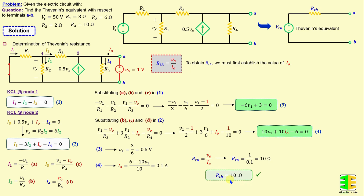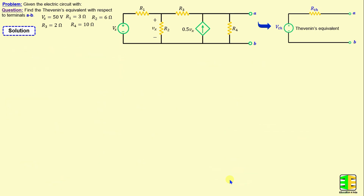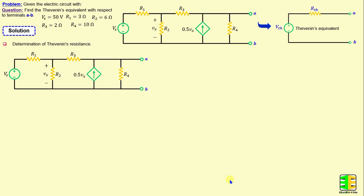After finishing the determination of Thevenin's resistance, we proceed to calculate Thevenin's voltage. The Thevenin's voltage is basically the open circuit voltage calculated between terminals A and B. To find the open circuit voltage VOC, I will apply the nodal analysis method. I will consider I1 as the current through R1, I2 through R2, I3 through R3, and I4 through R4.